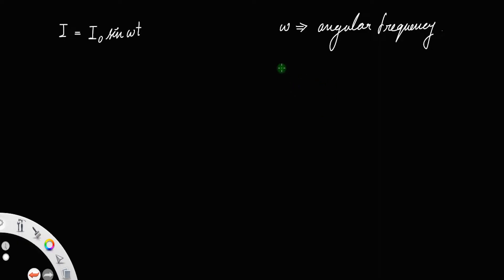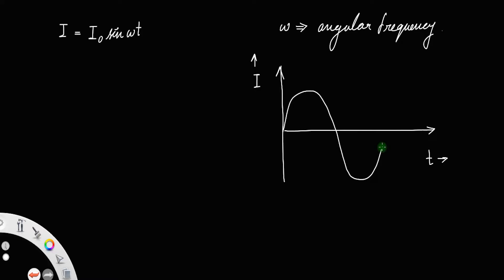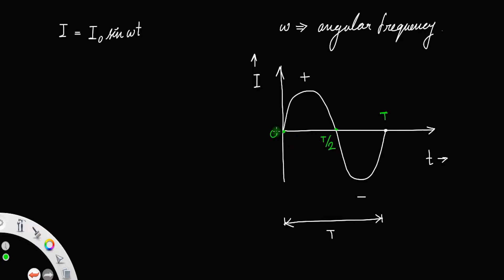If you look at the graph of alternating current, it will look like this. On the x-axis we represent time and on the y-axis we have the value of current. The plot will be like a sine wave. Clearly this graph has a positive half cycle and a negative half cycle. The time taken by the wave to complete one complete cycle is called the time period T.